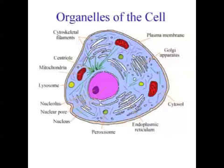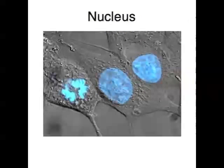Eukaryotic cells have specialised subunits that have specific functions and are usually separately enclosed within their own membrane — they're called organelles. The first organelle is the control centre of the cell, or the nucleus. The nucleus contains the genetic material, or DNA. The DNA is usually just dispersed within the nucleus, but during the process of cell reproduction, or mitosis, the DNA becomes organised into a number of rod-shaped chromosomes.